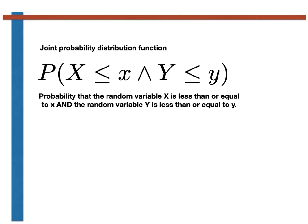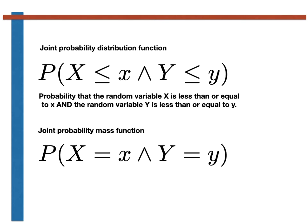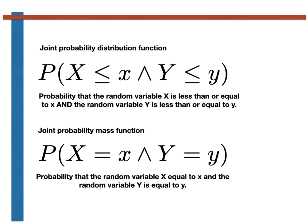Similarly, if our two random variables are discrete, we can introduce a joint analogue of the probability mass function — the joint probability mass function. This tells us the probability that the random variable X is equal to small x and the random variable Y is equal to small y.